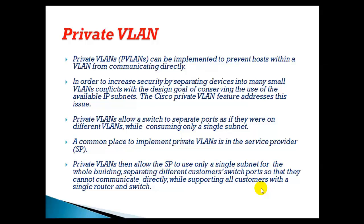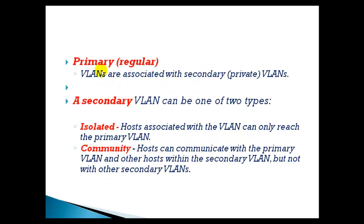In this section we will implement and verify private VLAN configurations. Private VLANs can be implemented to prevent hosts within the same VLAN from communicating directly. We have two types: primary VLANs and secondary VLANs. Primary VLANs are the main VLANs, and within them we create multiple secondary VLANs. Secondary VLANs have two categories: isolated and community VLANs.